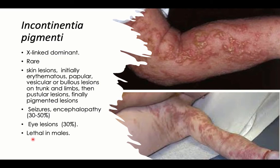This rare disorder is characterized by skin lesions starting initially as erythematous papules, vesicles, or bullous lesions on the trunk and limbs, that progress later to pustular lesions and finally pigmented lesions. It has a characteristic sequence of dermatological presentation.